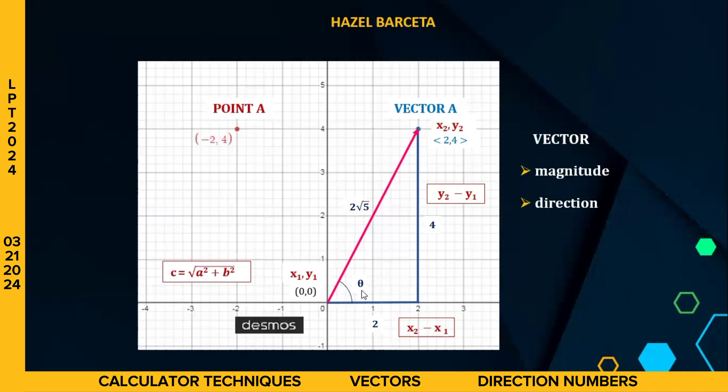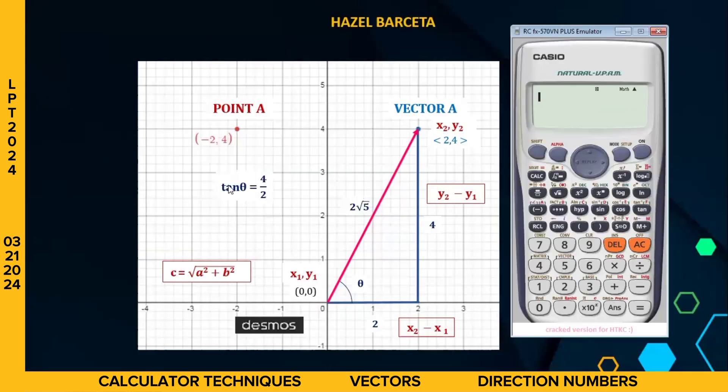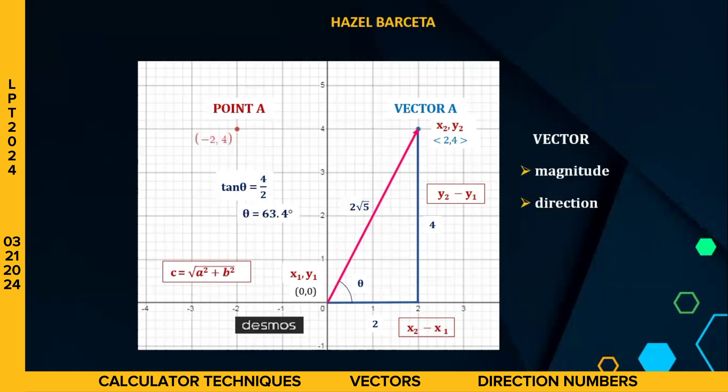How about the direction angle? We can use opposite over adjacent. So toa, we can have our tangent theta equal to 4 over 2. Opposite over adjacent. And our theta is equal to theta. Tatawid po yung tangent. So our tan, so shift tangent. 4 divided by 2, we have 2. Then equal sign, theta is equal to 63.4 degrees. Theta is equal to 63.4. And here, we have 63.4 degrees. So this is the direction angle with respect to x-axis.